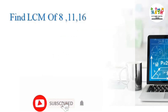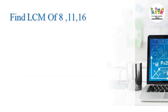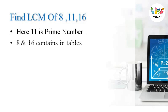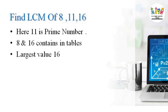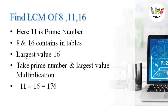Find the least common multiple of 8, 11, and 16. Here, 11 is a prime number and the largest number is 16. Also, 8 and 16 are in the same table. So take the multiplication of the largest value, 16, and the prime number, 11. We get 11 into 16 is equal to 176, so the LCM is equal to 176. We use the same trick discussed in the previous video.